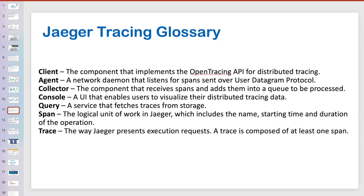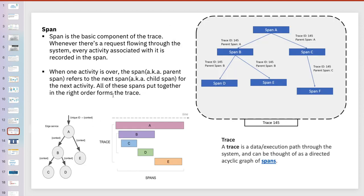Now let me explain what a span and a trace are. If microservice A hits microservice B and C, each request is called a span. So in this diagram, A hitting B and C creates one span for A, one span for B, and one span for C. Each span has a unique ID and a parent span reference. All the compute requests done for a single unit of work together is called a trace. A trace is a data or execution path throughout the system that can be defined in DAG form.